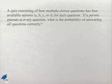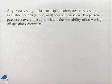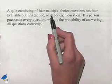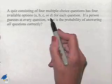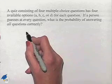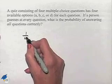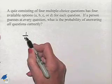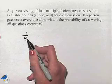If a person guesses at every question, what is the probability of answering all questions correctly? Well notice that we're going to have four different choices and we're just going to be choosing one of those four, so the probability of getting it correct would be one out of four—one way to get it right out of four possible answers.